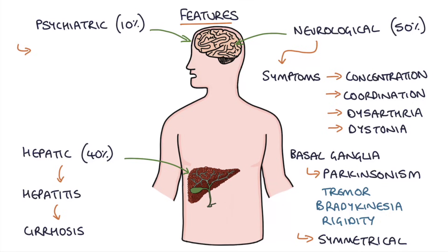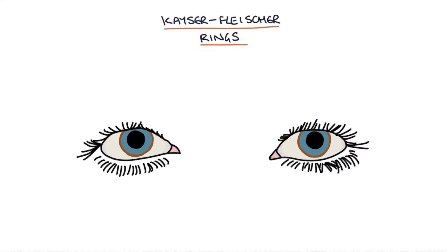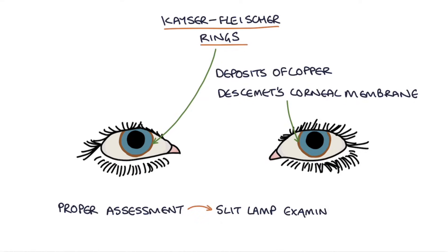Psychiatric symptoms can vary from mild depression to full-blown psychosis, and the underlying cause of Wilson's disease is often missed and treatment is delayed. Kayser-Fleischer rings are found in the cornea of the eye — they are deposits in Descemet's corneal membrane. These are small circular brown rings that present around the eye in patients with Wilson's disease, and while they can usually be seen by the naked eye, proper assessment requires a slit lamp examination.